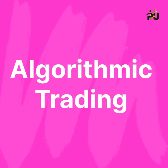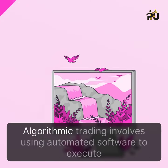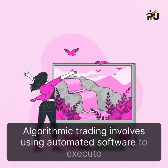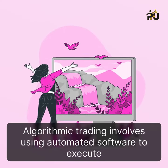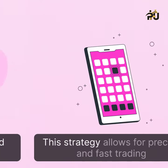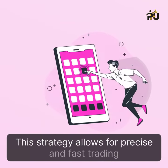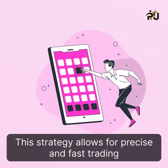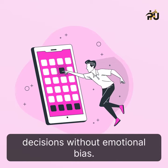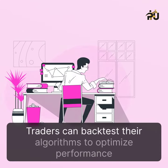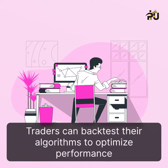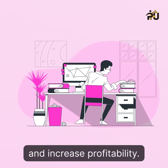Algorithmic trading involves using automated software to execute trades based on predefined criteria. This strategy allows for precise and fast trading decisions without emotional bias. Traders can backtest their algorithms to optimize performance and increase profitability.